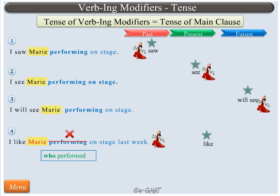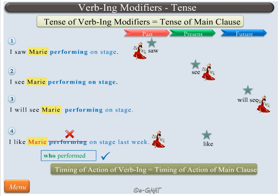Thus, whenever a verb ING modifier is used, always make sure that it makes sense for the timing of this modifier and the main clause to be the same. If the timing has to be different, then either the verb ING modifier must be changed to a relative pronoun modifier with the correct tense, or the main clause verb tense must be changed to convey the intended meaning.